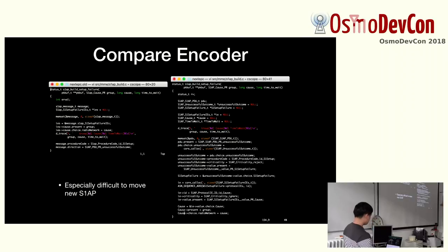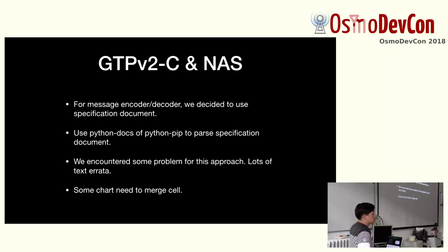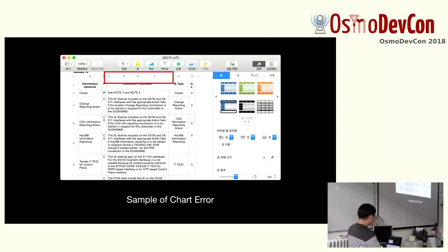For GTPv2c and NAS messages, we use a spec document approach: a Python docx library reads the spec document and generates C code. We encountered some problems — lots of text data like in the previous session, and charts need cell merges. Before running the script I need to manually fix the cell merges in all the tables.